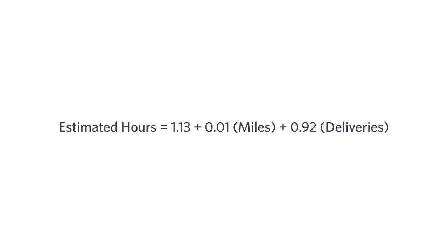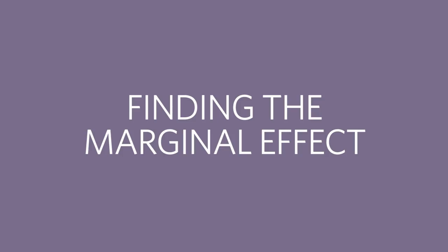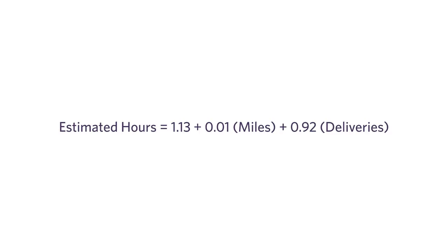Now here's where life gets fascinating. Regression analysis, when you have more than one factor — like miles and deliveries trying to explain hours — gives you back what's called the marginal effect. The 0.01, technically speaking, is the marginal effect of miles on hours. The 0.92 is the marginal effect of deliveries on hours. That means 0.01 is the effect of an additional mile on hours after filtering out the effect of deliveries on hours.